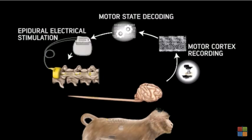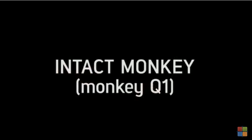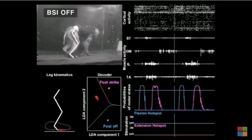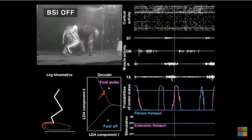We validated the brain-spinal interface in intact monkeys walking freely on a treadmill. The decoder accurately predicted foot-strike and foot-off motor states during continuous locomotion.